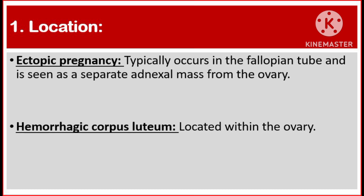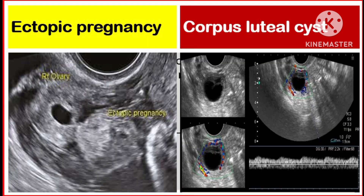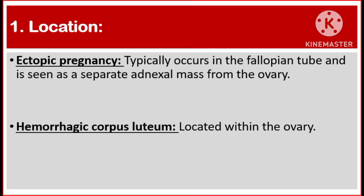Number one, location. Ectopic pregnancy typically occurs in the fallopian tube and is seen as a separate adnexal mass from the ovary. But hemorrhagic corpus luteum is located within the ovary.